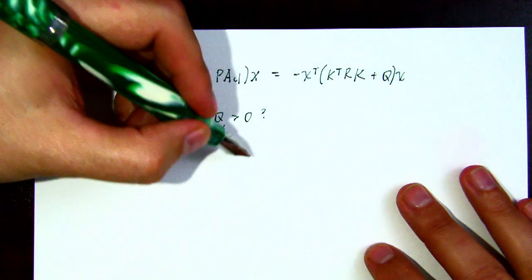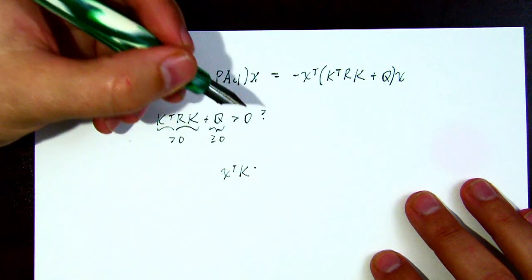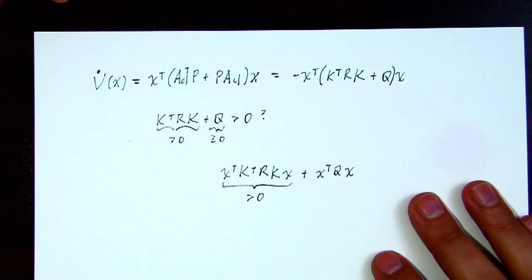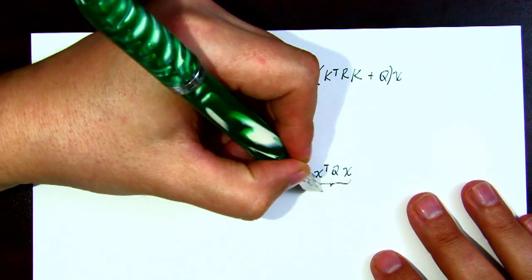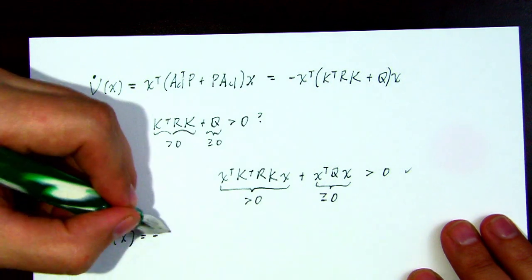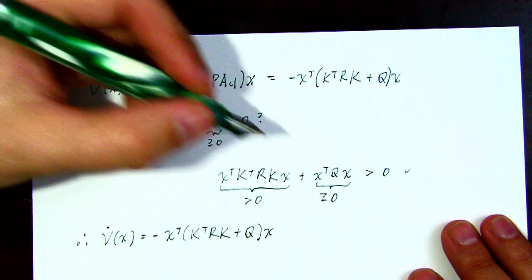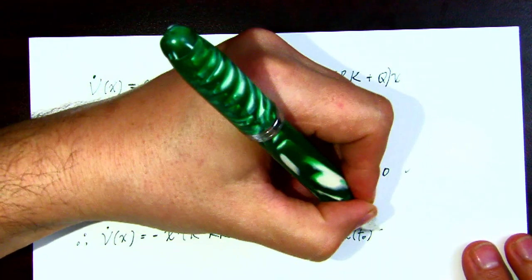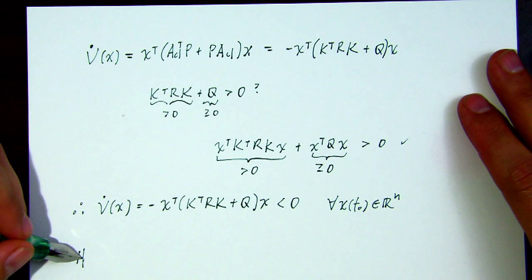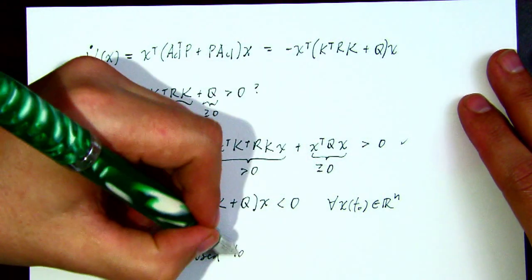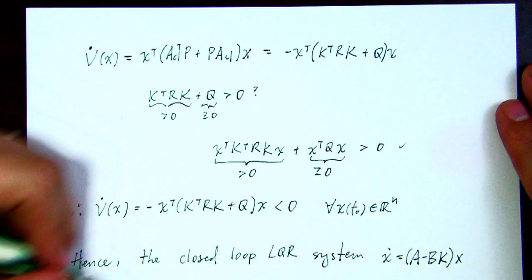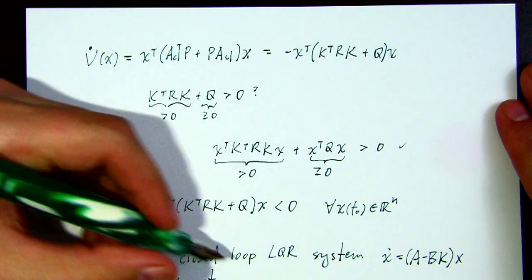The first term K^T R K is positive definite and Q is positive semi-definite. Multiplying by x on both sides gives a scalar: the first term is greater than zero and the second is greater than or equal to zero, so their sum is positive definite. Therefore that matrix sum is positive definite, V-dot is negative definite for all of R^n, and hence the closed-loop LQR system is globally asymptotically stable — which is what we set out to prove.